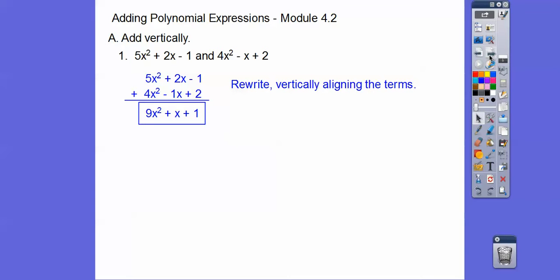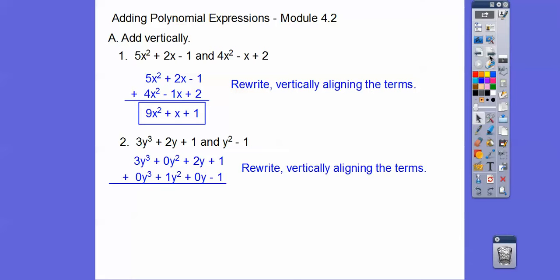So when we just do that, there we go. Easy, huh? Okay, let's try that with this one. So we're going to go ahead and rewrite vertically and align the terms. So notice there's going to be some 0s in there. This has a y squared, but this one doesn't have a y squared.